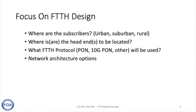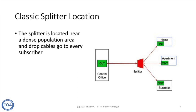Within the parameters established by where the head end and the subscribers are, what network architecture are you going to choose? That's a big question, because it defines where splitters are, what kind of cables you need to use, and what kind of hardware you might be using at various locations around the network. The classic splitter location is near the subscribers, with a single fiber coming from the OLT to the splitter and then drop fibers going to the individual subscribers. This works in a lot of areas, specifically in dense urban areas where there are a lot of users.